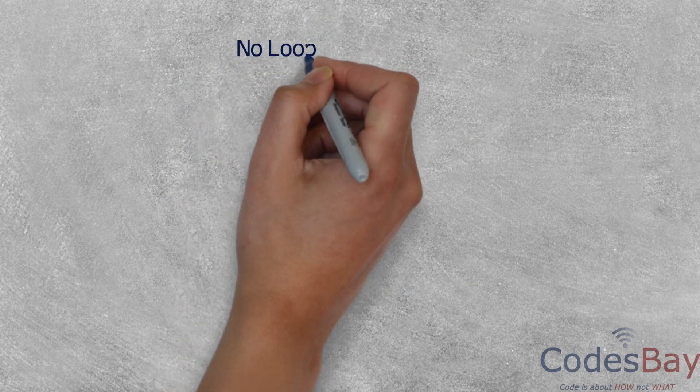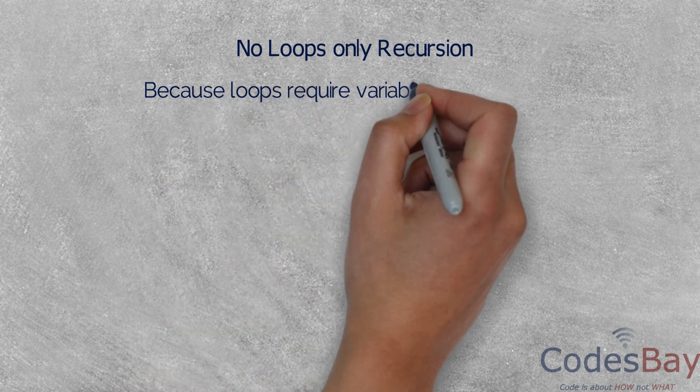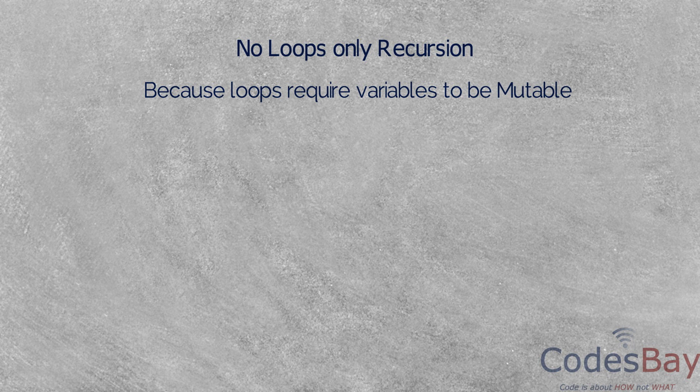You may be surprised to know that in functional programming there are no loops, only recursions. Because loops require mutable variables which is against the basic construct of functional programming.